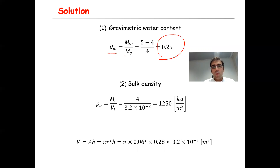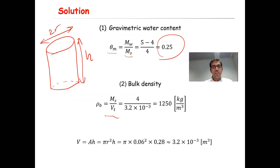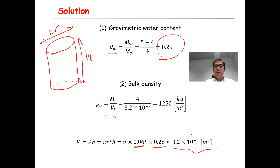The next part was bulk density: rho_B equals Ms divided by Vt. Ms is 4 kg. The total volume of the cylindrical sample is V equals pi times R squared times H. With diameter 0.12 m and height 0.28 m, the total volume is 3.2 times 10 to the minus 3 cubic meters. So rho_B equals 4 divided by 3.2 times 10 to the minus 3, which equals 1,250 kg/m³. That is the bulk density.